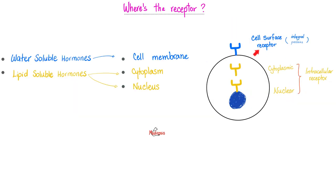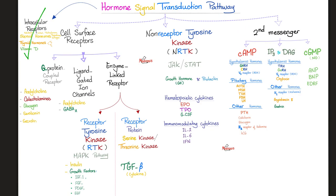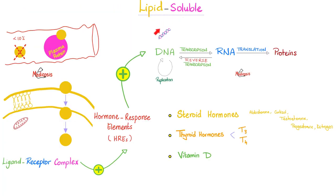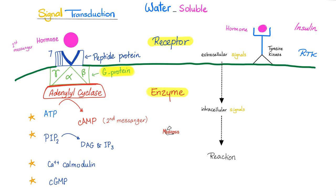Today's topic is the water-soluble ones. If the hormone is water-soluble, the receptor has to be on the outside, on the surface of the cell. The intracellular receptor is for fat-soluble hormones - we have discussed this before. G-protein was the topic of the last video.